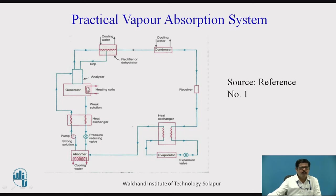So in simple vapor absorption system, the problem was that though the ammonia boils off because its boiling point is less, there are chances of carrying of some water vapor also. Some water droplets may also be carried with the ammonia vapor to the condenser. And if they go to the condenser, then they may get choked in the expansion valve after reducing the pressure, which will cause choke up of the pipeline or expansion valve.